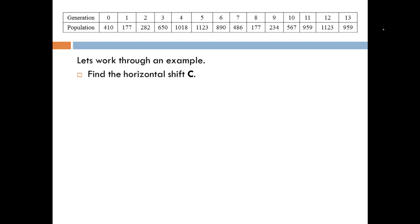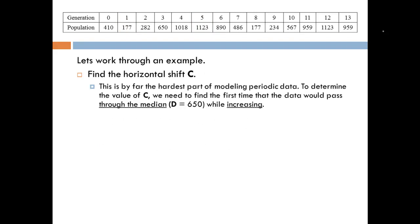The last thing we need to do is figure out the horizontal shift, and this is usually the hardest part to figure out. In order to figure out this value of C, we need to look at where the data is going to pass through the median the first time and while it's increasing. We had already said that the median was 650, so I need to look through the data and find out where the data is going to pass 650. The 650 doesn't even need to be one of the data values, it just has to be where the data would pass through it. If we start in the initial generation, there's 410 and it decreases for that first generation, but then it starts to increase. It increases from the first to the fifth generation, from 177 up to 1,123, which means as it increases it has to pass through 650, and that happened in the third generation. So the value of C is going to be 3.